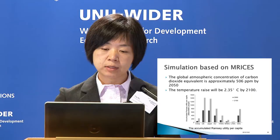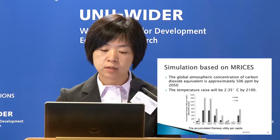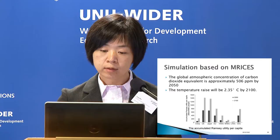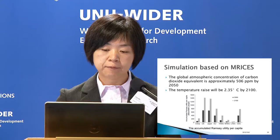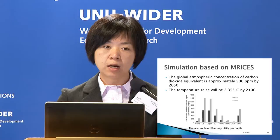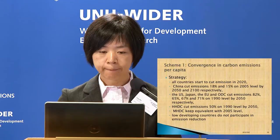Based on the MRACE model, we get the temperature change under Scheme Zero. We found that the temperature rise in Scheme Zero will be 2.35 degrees by 2100, and the CO₂ equivalent concentration by 2050 is about 506 ppm. As we can see, in Scheme Zero the temperature rise in 2100 cannot be controlled within 2 degrees.